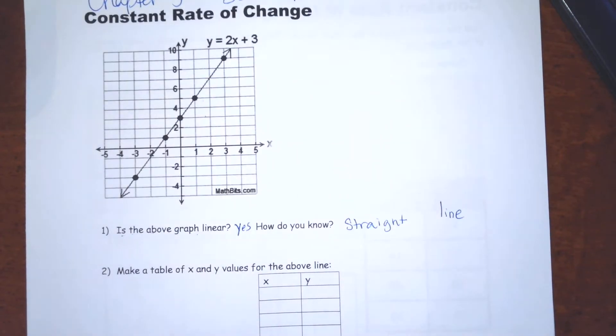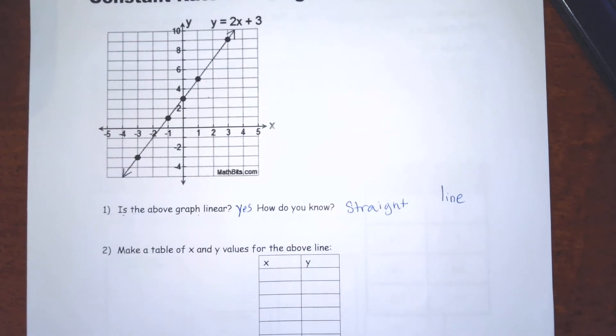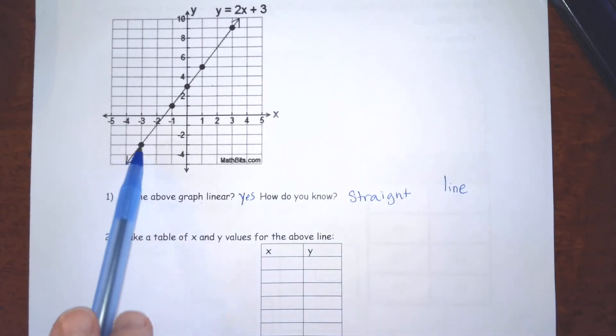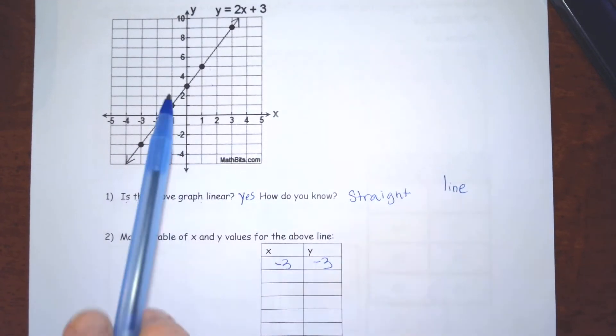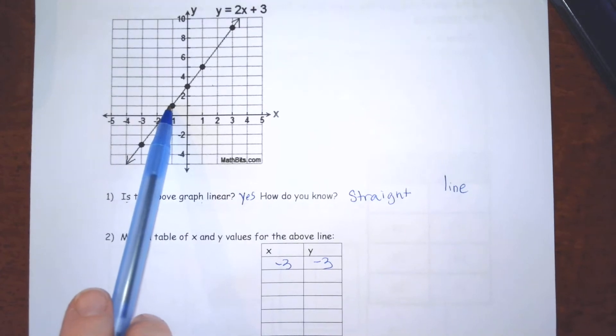Make a table of the x and y values of the above line. So we're going to start here with this point. It's negative 3, negative 3. And this point is negative 1, 1.